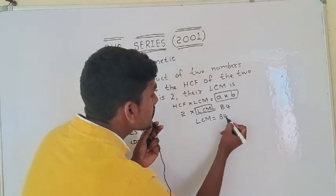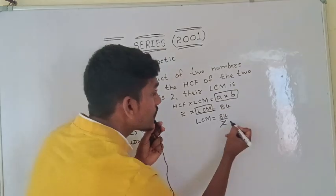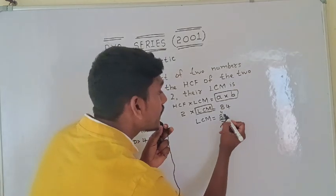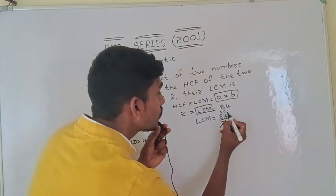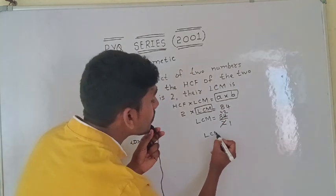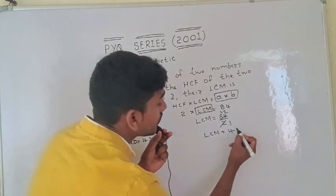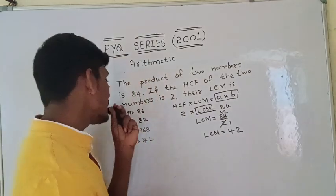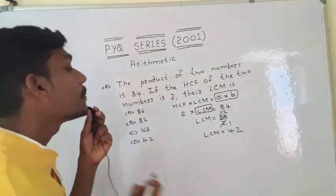84 is divisible by 2. So what happens? The answer is 42. The property is 42. LCM is 42.